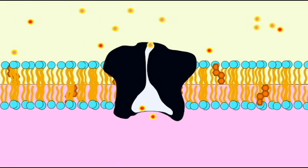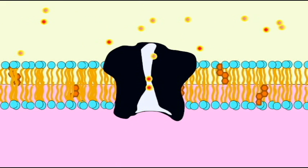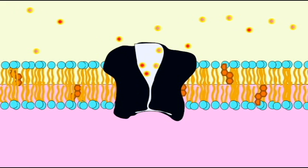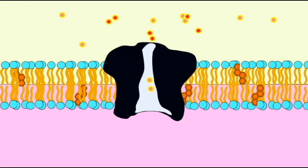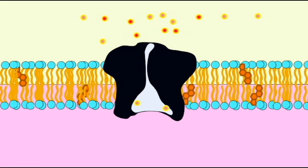Sodium can also be used to power the exit of things from the cell as it enters. In this animation, the sodium ions, the light red, are at a high concentration outside the cell and would like to come in.